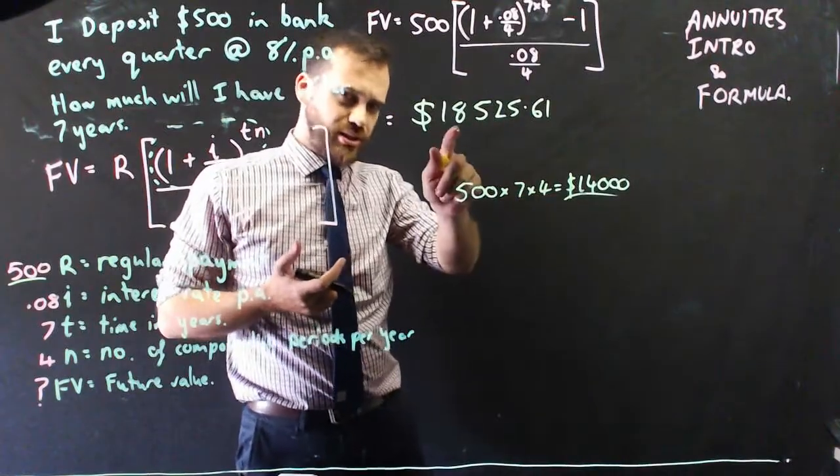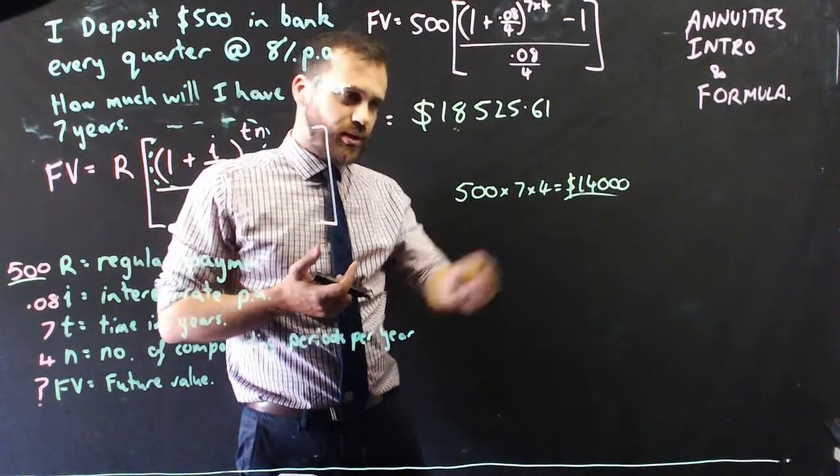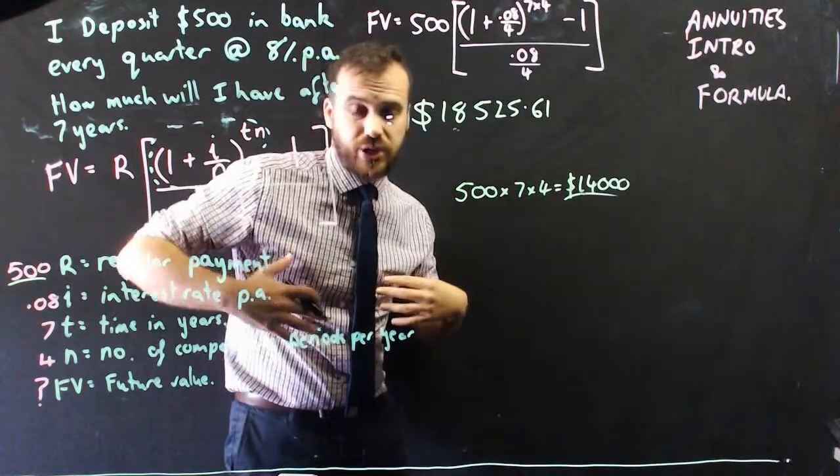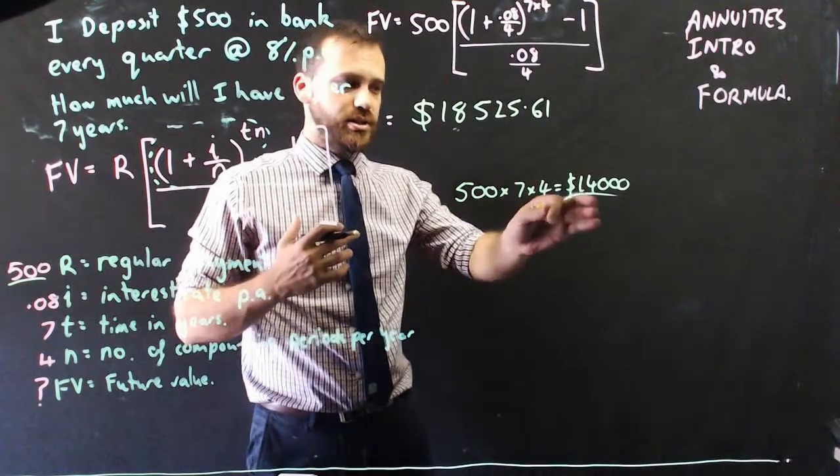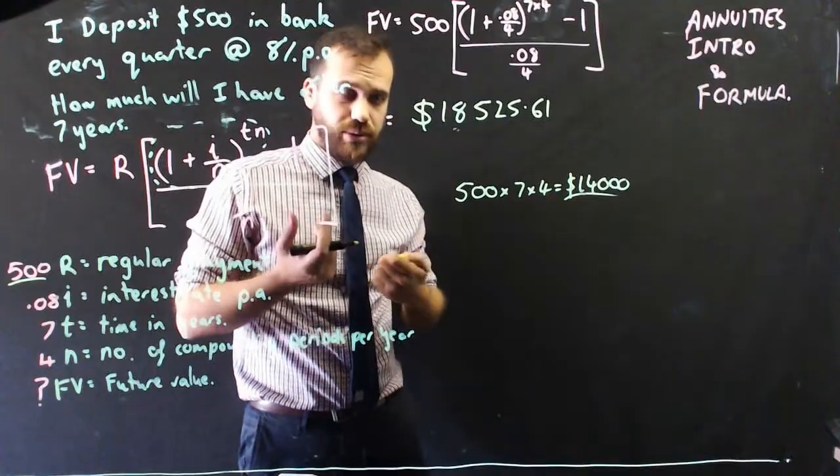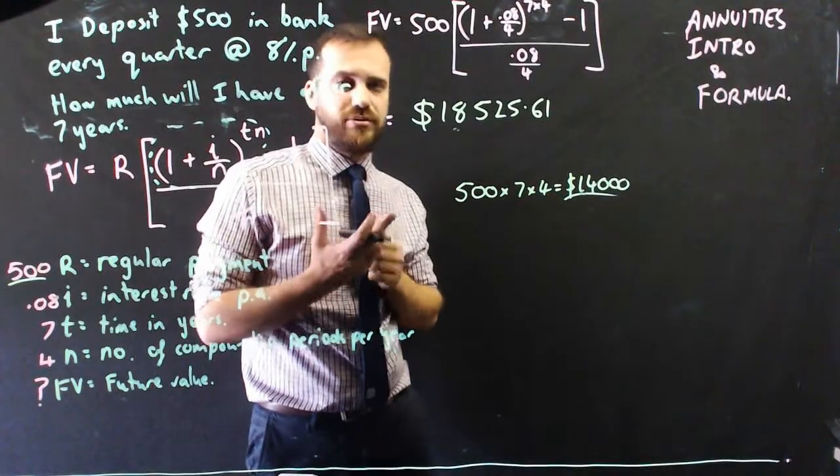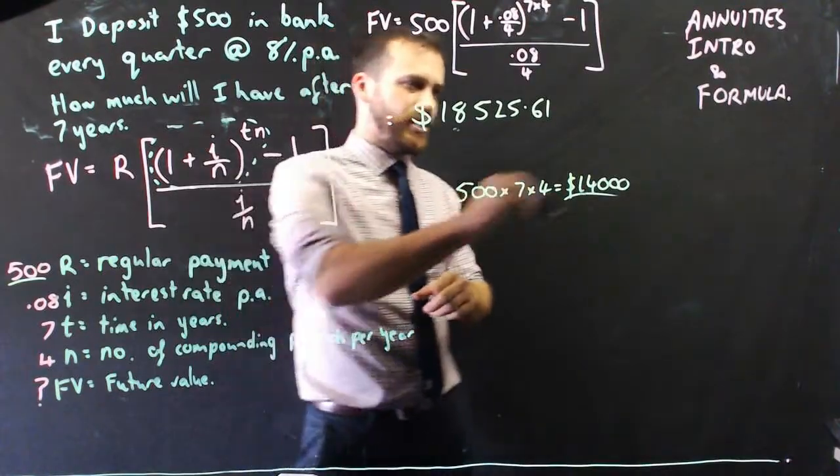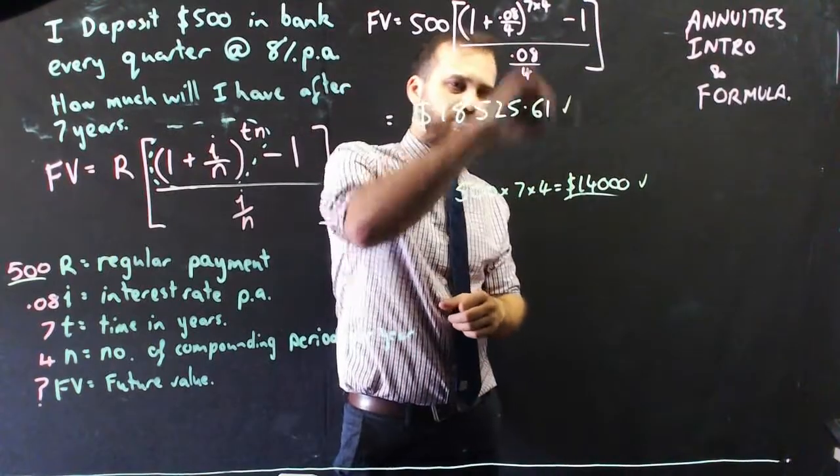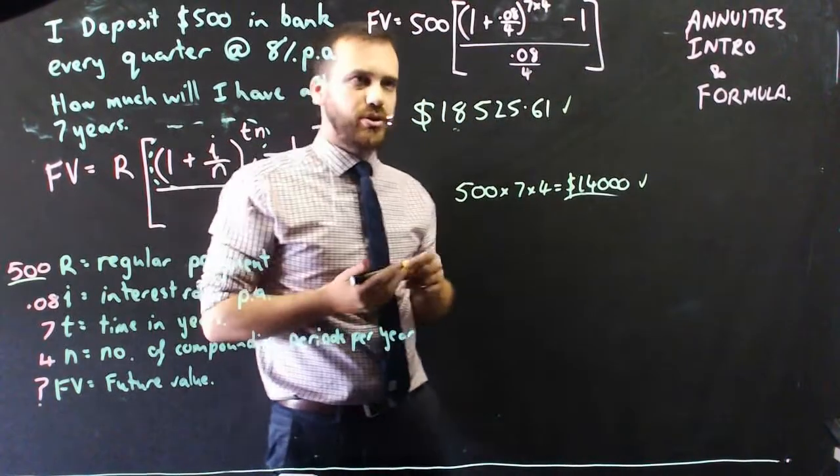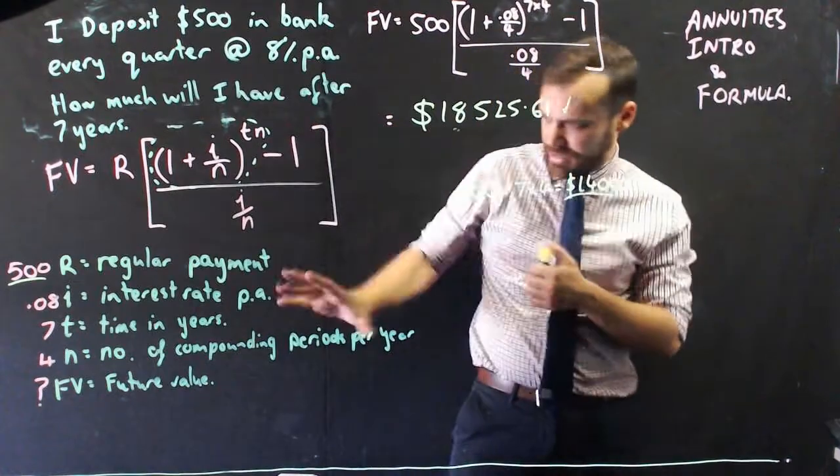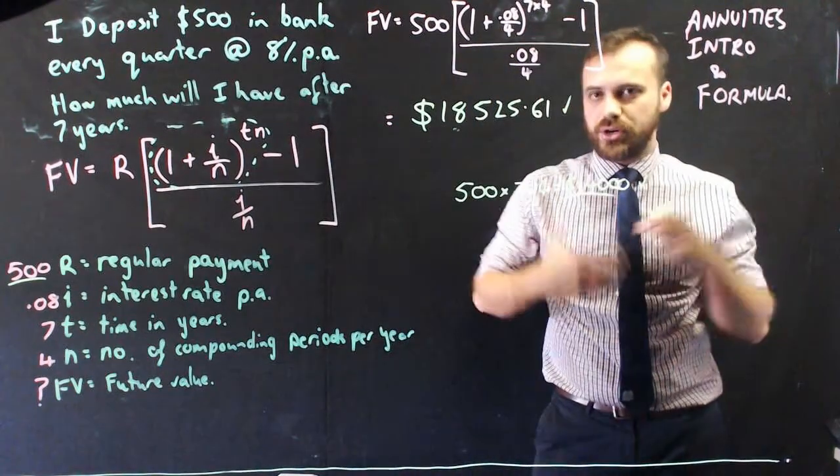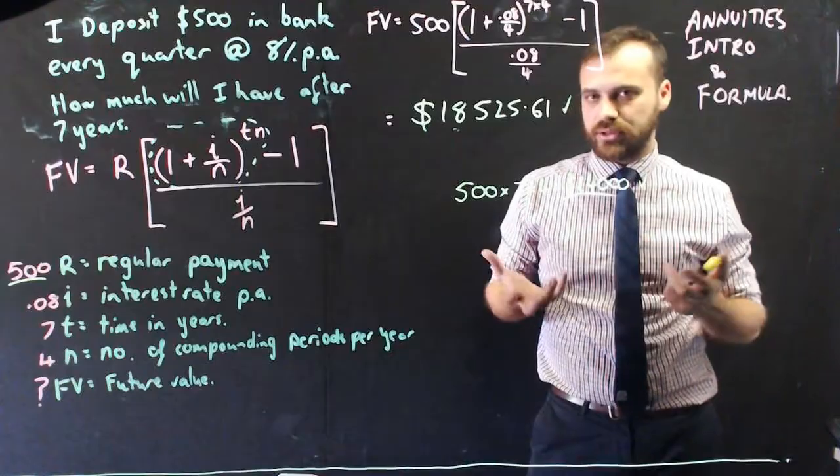If that number was larger than that number, that would be a problem. If this number was extraordinarily larger than this number, that would also be a problem, unless the interest was really, really large. So I feel like I've checked it, and that's probably right. You can also check it by putting in all of that information into your TVM mode of your calculator.